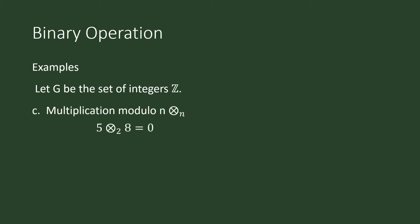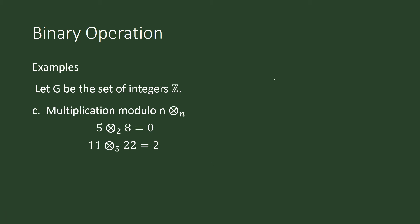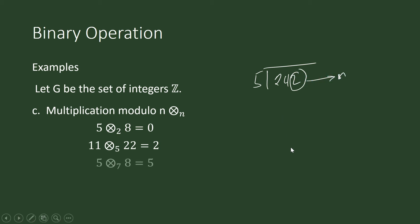We can proceed with multiplication modulo n. The idea is the same: we get the product but divide it by n and look for the remainder. 11 times 22 multiplication modulo 5 gives 242 divided by 5, and the remainder is 2. And 5 times 8 multiplication modulo 7 is equal to 5.